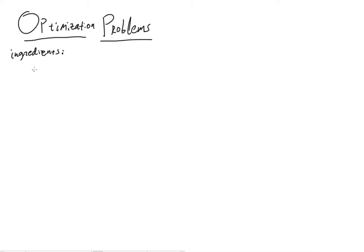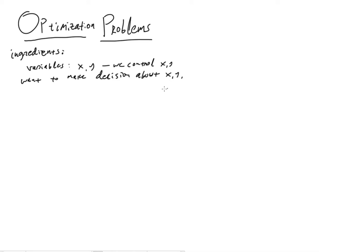The first thing you have are some variables. In this case we'll say they're x and y. We control x and y together — we have to make a decision about what x and y need to be. The goal, of course, is to maximize or minimize some other value, which in this case we'll call z.